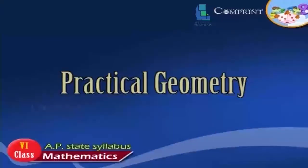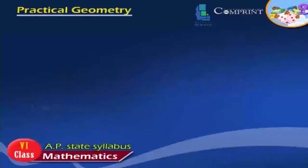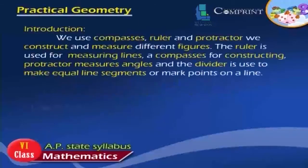Practical Geometry. Introduction: We use compass, ruler and protractor. We construct and measure different figures. The ruler is used for measuring lines, a compass for constructing, protractor measures angles and the divider is used to make equal line segments or mark points on a line.